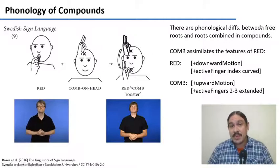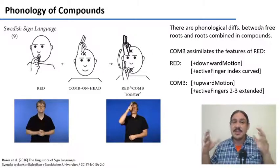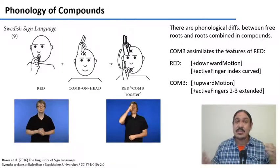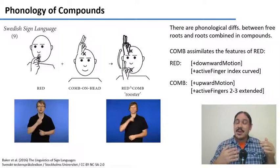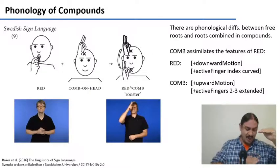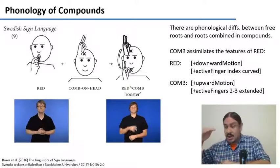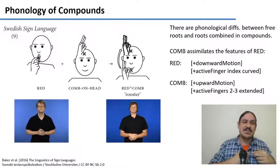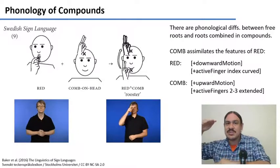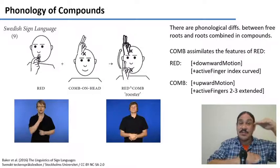When you have compounds in sign languages, the words can suffer phonological changes. We see this in spoken languages as well. For example, in a compound the stress falls on the first word, as in 'hot dog'. If the words are separate, you'll find the stress in the second word — 'a hot dog'. So there is a phonological change: if you have the roots separately you get one stress pattern, but if you join them in a compound you get a different stress pattern.